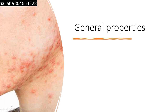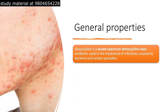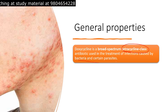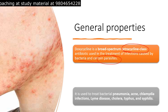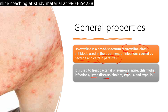Let's start with the general properties. Doxycycline is widely used for acne treatment. It's a broad-spectrum tetracycline class antibiotic used in the treatment of infections caused by bacteria and certain parasites. It is used to treat infections like pneumonia, acne, chlamydia, Lyme disease, cholera, typhus, and syphilis.